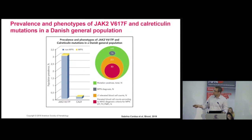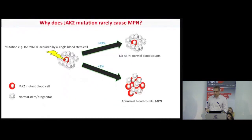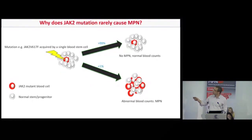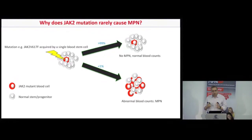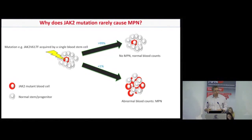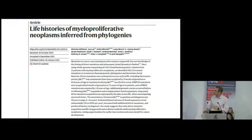The same actually applies to the other common mutation in myeloproliferative neoplasms, the calreticulin mutation. The JAK2 mutation occurs in blood-forming stem cells, and in some patients it does lead to abnormal blood counts and a myeloproliferative neoplasm, but the reality is in the vast majority of people who get this mutation, no blood disease develops. Understanding why is a crucial question, because it might lead us to better ways to tackle and even prevent the disease.